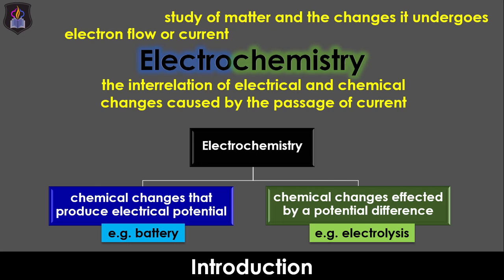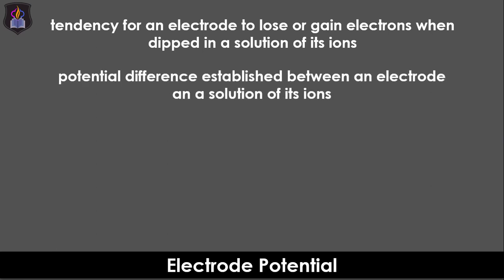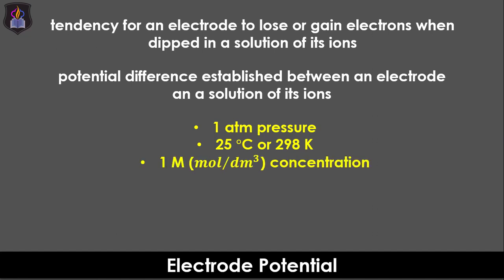To learn more about electrolysis, check the link in the description. Electro potential is the tendency for an electrode to lose or gain electrons when dipped in a solution of its ions. It can also be defined as the potential difference set up between an electrode and a solution of its ions. When measured under standard conditions of one atmospheric pressure, 25 degrees Celsius or 298 Kelvin, and one molar concentration, it is called the standard electrode potential.